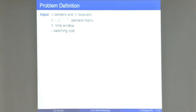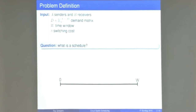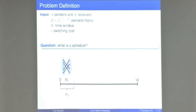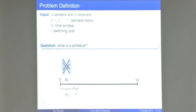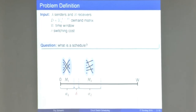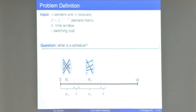Before formally defining the objective, let's define what a schedule is. Our time window goes from zero to w. We first choose matching M_1 and send data over it for duration alpha_1, then pay the fixed switching cost delta. We choose a different matching and transmit for duration alpha_2, then pay delta again, and so on — but the total time cannot exceed w.